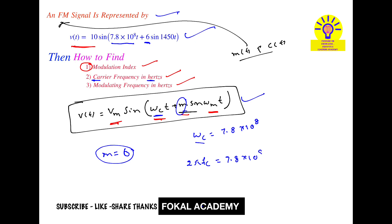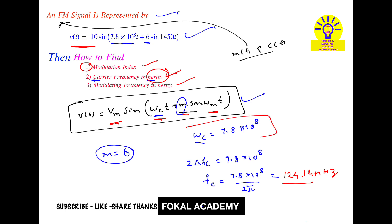From this, fc = 7.8 × 10^8 / (2π). Simplifying, we get fc = 124.14 MHz. We are asked for the answer in hertz, which is why this calculation is shown. If radians were acceptable, we would leave ωc as is.